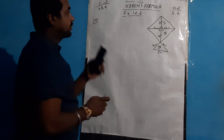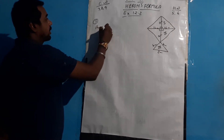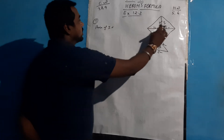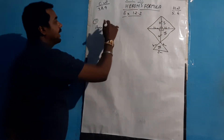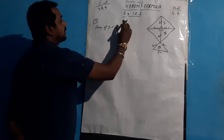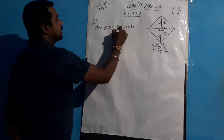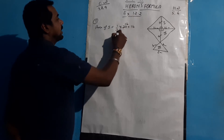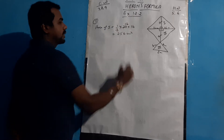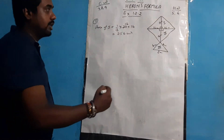For the first part, we can apply the area of a right-angle triangle. The base is 32 and the height is 16, so area = half × base × height = half × 32 × 16 = 16 × 16 = 256 cm².